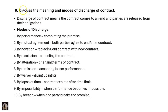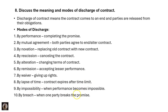The next question: discuss the meaning and modes of discharge of contract. Discharge of contract means the contract comes to an end and parties are released from their obligations. Modes include: by performance, by mutual agreement, by novation — replacing old contract with new — by recession meaning cancelling the contract, by alteration meaning changing the terms, by remission meaning accepting lesser performance, by waiver meaning giving up rights, by lapse of time meaning the contract expires, by impossibility when performance becomes impossible, and by breach when one party breaks the promise.